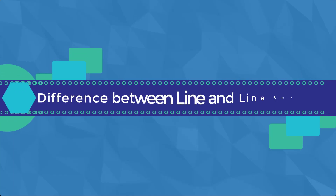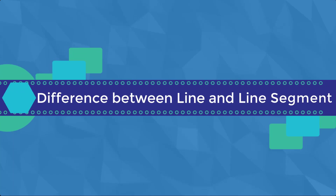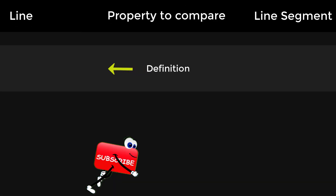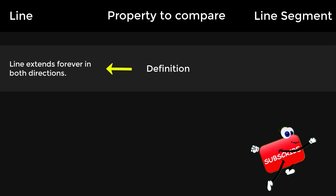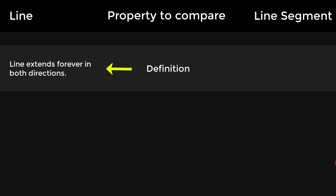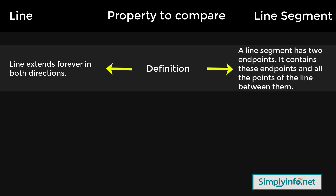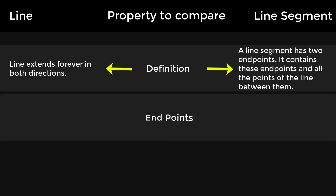Difference between line and line segment. Definition for line: a line extends forever in both directions. Definition for line segment: a line segment has two endpoints; it contains these endpoints and all the points of the line between them.